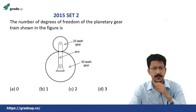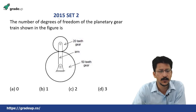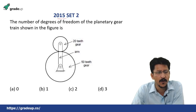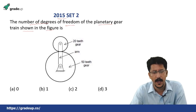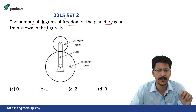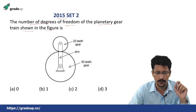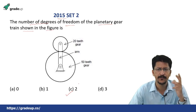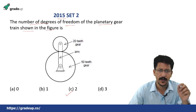Let's start from 2015. There is a question that appeared in GATE 2015 Set 2. It says the number of degrees of freedom of the planetary gear train shown in the figure is. I have told you this while we were talking about the degree of freedom of this planetary gear train. If you remember, directly the answer is 2. But if you do not remember it or feel any confusion, you can follow the procedure and get the answer that way also.